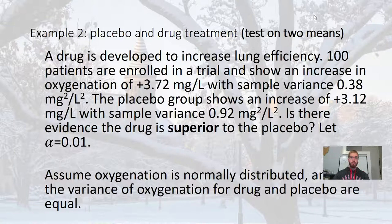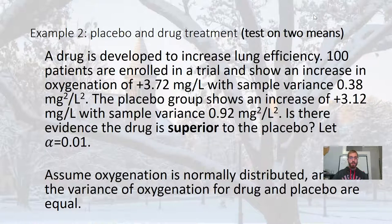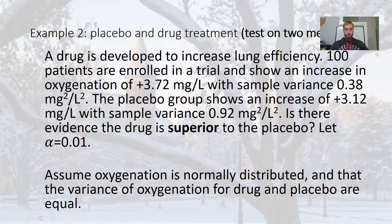So we develop a drug to increase lung efficiency. We have 100 patients enrolled in the trial, 100 each for the drug and the placebo. And so the 100 patients show an increase of 3.72 milligrams per liter of oxygenation with sample variance 0.38 milligrams squared per liter squared. The placebo group, also with 100 people, show an increase of 3.12 with sample variance of 0.92 milligrams squared per liter squared. Is there evidence the drug is superior to the placebo? Let alpha equal 1%. So keep in mind the word superior here has a direction to it, doesn't it? Superior means better. So we're going to have a one-sided hypothesis in this context for the alternative hypothesis. So we did a couple with the unequal for a two-sided hypothesis. But we're back to one-sided for this problem because of that word superior here. That just refers to one direction.